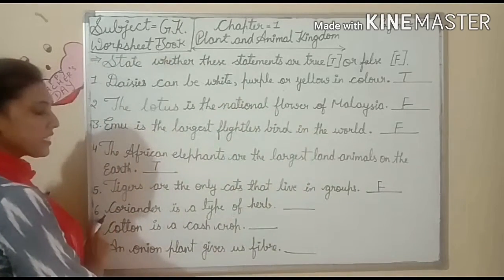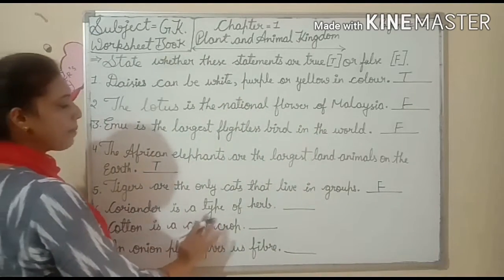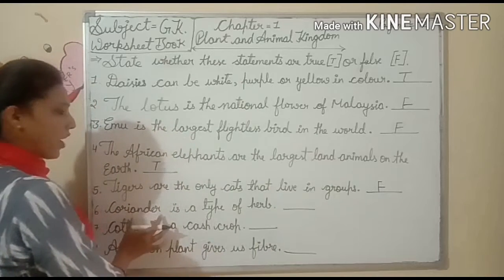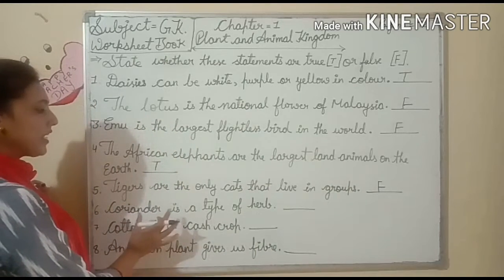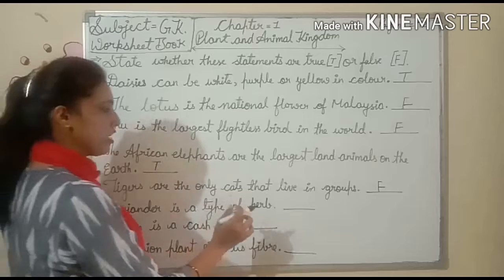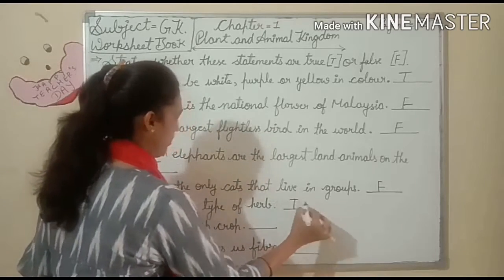Next, number 6: Coriander is a type of herb. Coriander — what is it? Its name is dhaniya. It is a type of herb. Yes. So you write here: true.